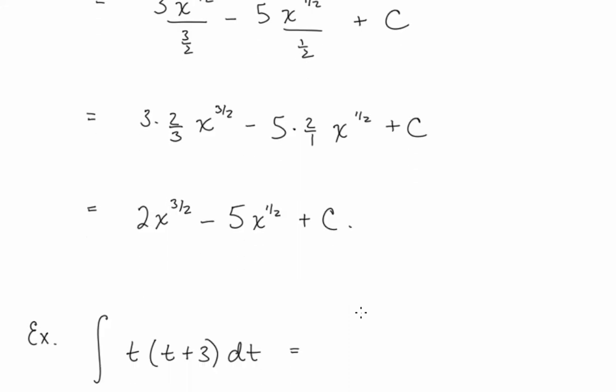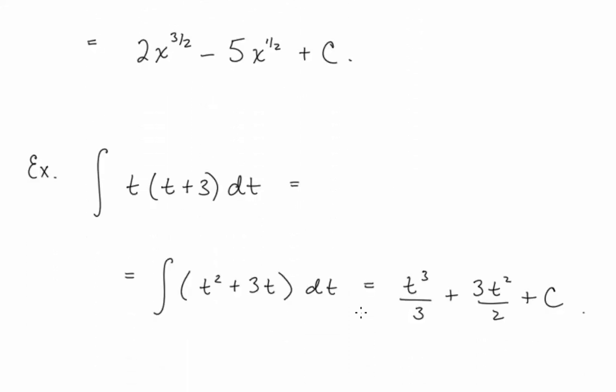Let's take a look at another example. Here we have the integral of t times t plus 3 dt. Now, we don't yet have a rule for taking the antiderivative of a product of functions, so before we take an antiderivative, we need to distribute our t. So we have t squared plus 3t inside the integral. Now we want to take an antiderivative, that's t to the 3rd over 3 plus 3t squared over 2 plus a constant.